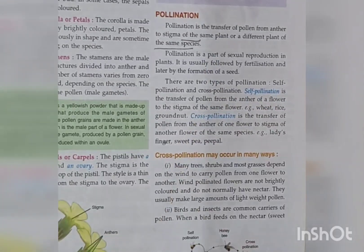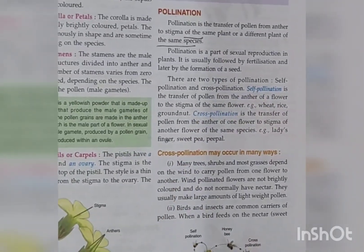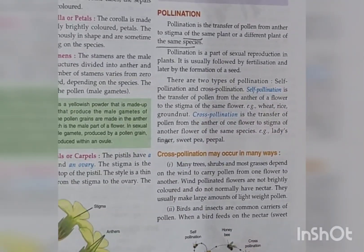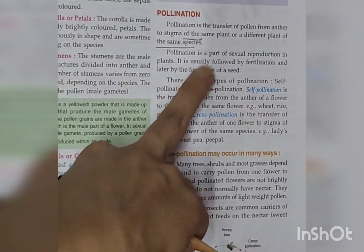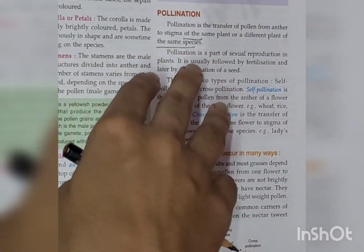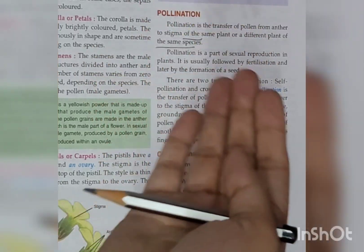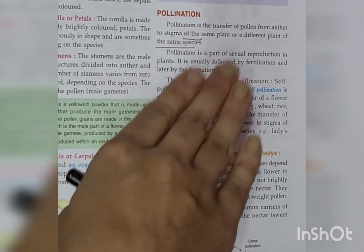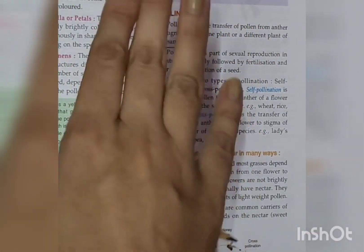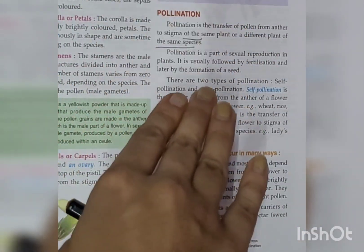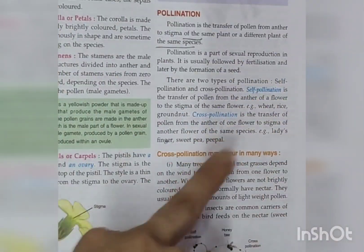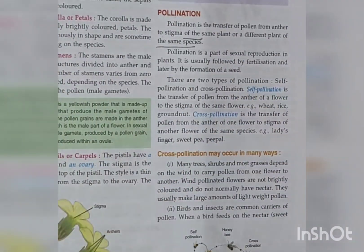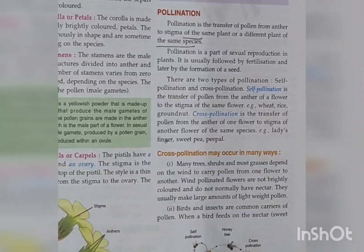Pollination is a part of sexual reproduction in plants. It has two different ways: one is vegetative or asexual reproduction, and one involves a seed. Pollination involves male and female parts — anther is male and stigma is female — so it is sexual reproduction.